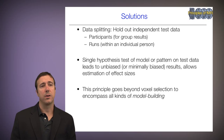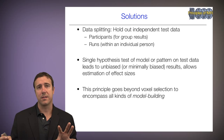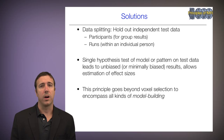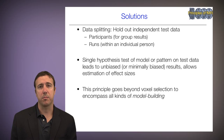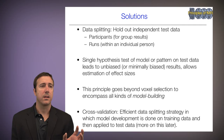This principle goes beyond voxel selection to encompass all kinds of model building — whether you're designing a connectivity or dynamic causal model, a predictive model with multimodal data, or anything else. The same principles hold. One really effective strategy we'll talk about later is cross-validation: an efficient data-splitting strategy in which model development is done on training data and testing is done on another subset systematically. We'll discuss that when we cover machine learning later in the course.